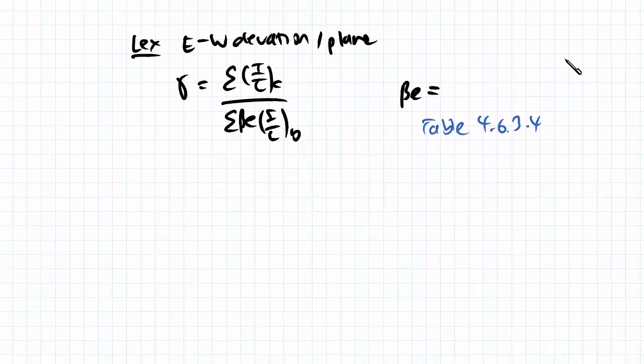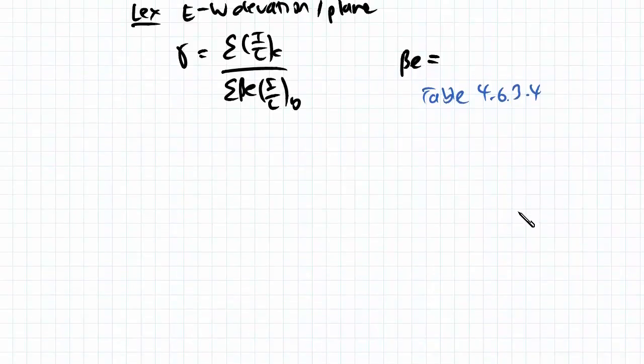So our effective lengths, if you remember, is determined by the ratio of the stiffness of our columns over our beams. That is determined by the gamma ratios where we have a gamma ratio for the top and bottom of a column.